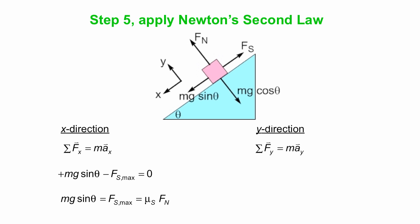What about the y direction? Well the y direction, we also have net acceleration of zero, so we have plus fn, that's in the plus y direction, minus mg cosine theta equals zero. So this tells us what the normal force is, it's mg cosine theta.